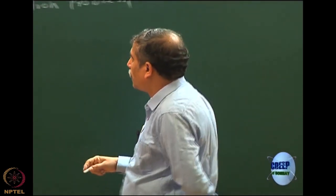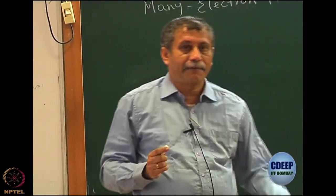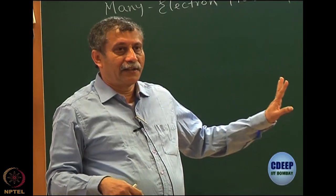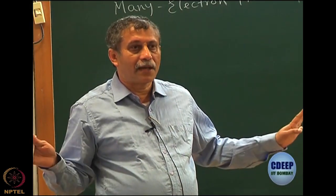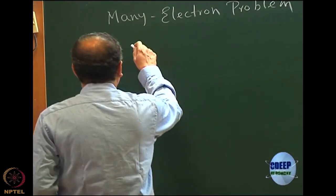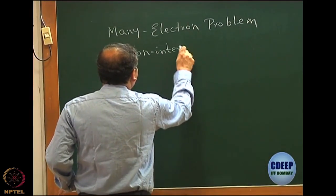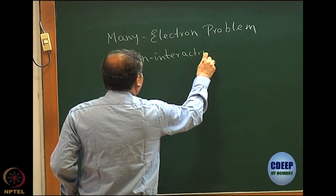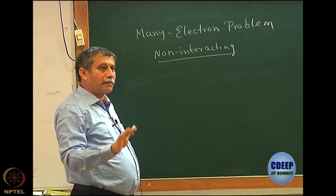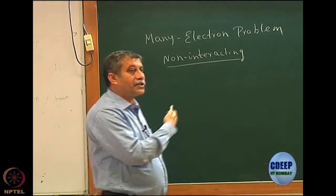First, we want to talk about the many-electron problem. When we say many-electron problem, it is by definition an interacting many-electron problem, because if the electrons are non-interacting, the problem is simply a sum of one-particle problems. So the first, trivial case of a many-electron problem is where the electrons or particles are not interacting with each other.